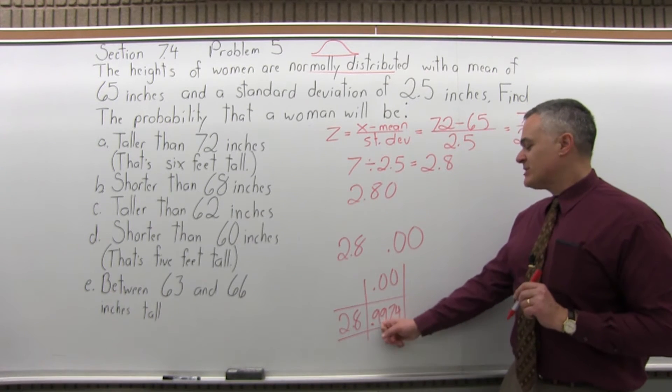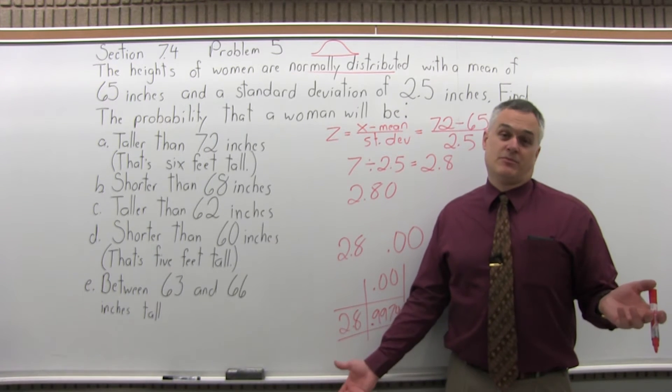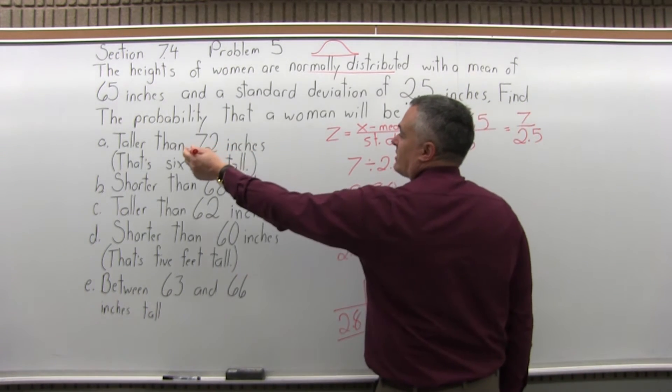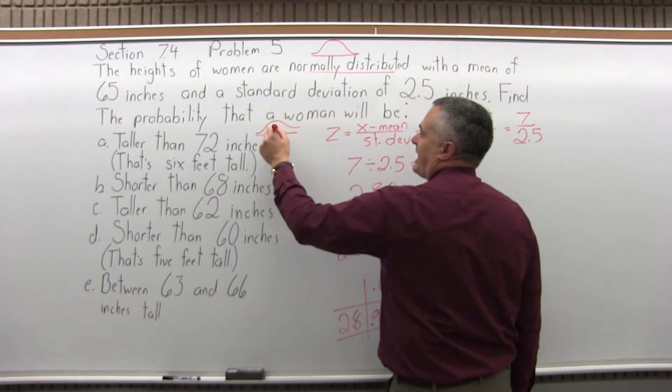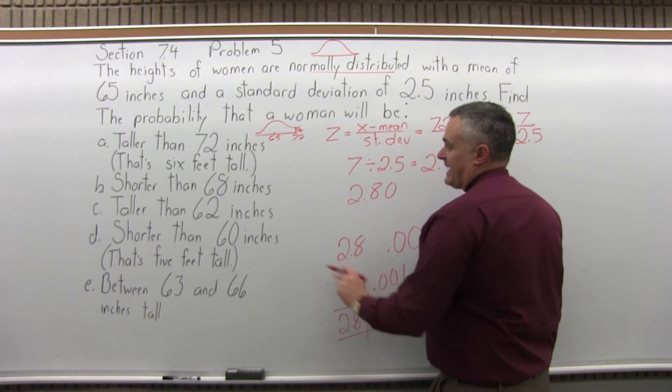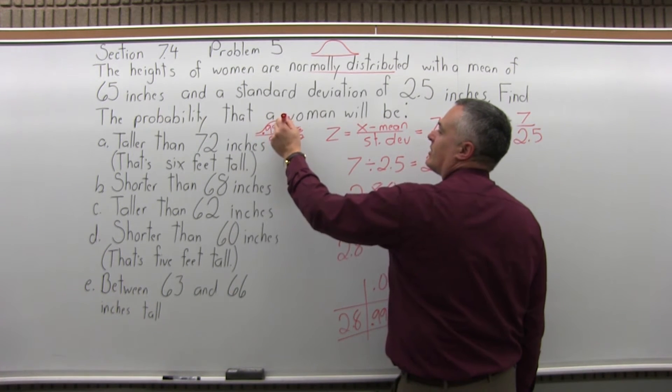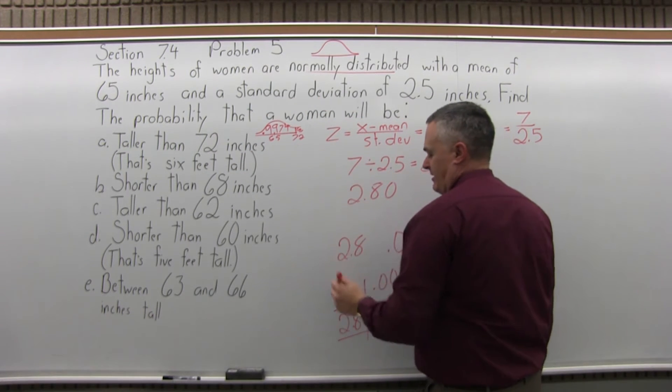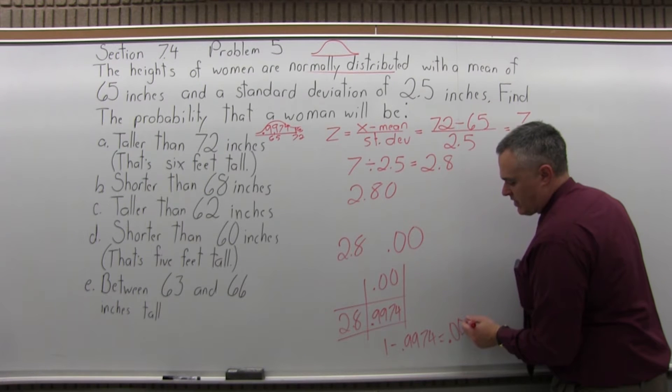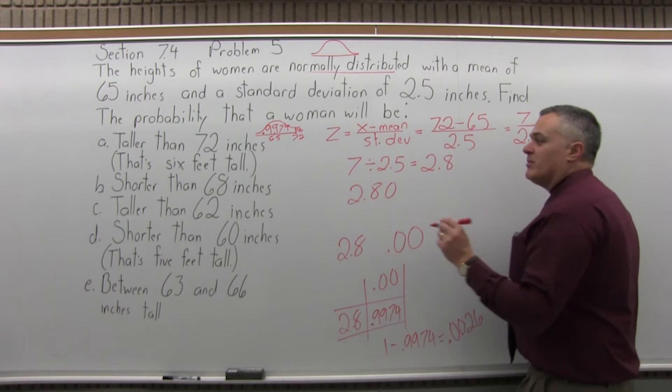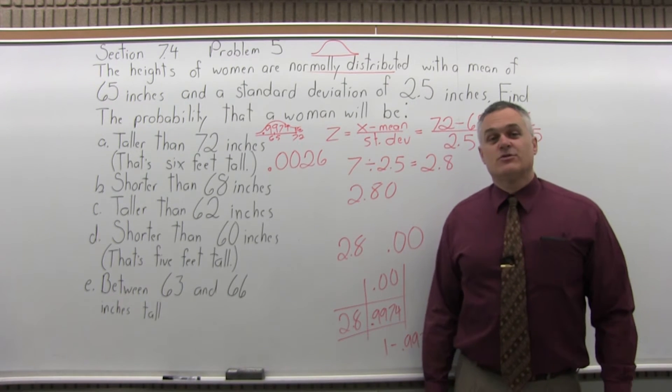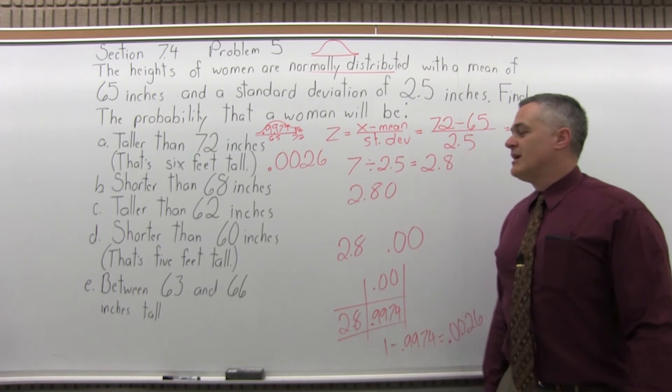Now that's not the answer yet. Is there a 99% probability that a woman will be taller than 6 feet tall? That means almost all women are taller than 6 feet tall, and you'd know that's not the case. So this is taller than, it's like a greater than. 72 is bigger than the mean of 65, we want to find the area past the 72. The 9974 from the chart is the blank portion of the bell curve. So we have to do 1 minus that. 1 minus .9974 will be .0026. So the probability that a woman is taller than 6 feet tall is .0026. It's about a quarter of a percent. It's very unlikely.